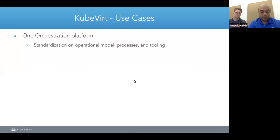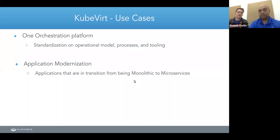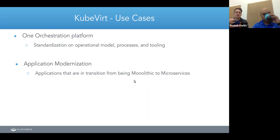Let's go through some use cases. You have Kubernetes as one orchestration platform to manage both virtual machines and containers, meaning you can use your CI/CD pipeline, your processes, your GitOps or whatever you've done to integrate Kubernetes with other in-house systems including monitoring and logging. One underrated benefit of using KubeVirt to manage VMs is having that single orchestration platform.